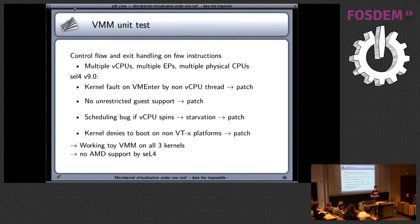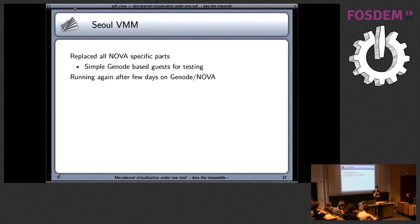At the end of the day, the toy virtual machine monitor was running on all three kernels. It also works on AMD on my private home machine for Fiasco OC and Nova, but seL4 has no AMD support. The next step was to run real virtual machine monitors, not the toy. We have Seoul and VirtualBox 5 as ports. I decided on Seoul first because it's much smaller than VirtualBox and easier to debug if you run into trouble.